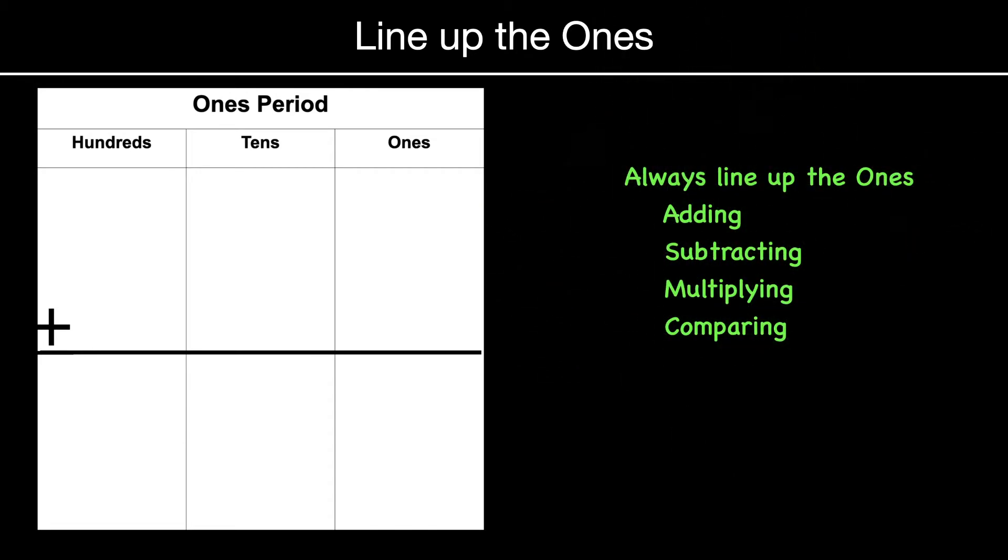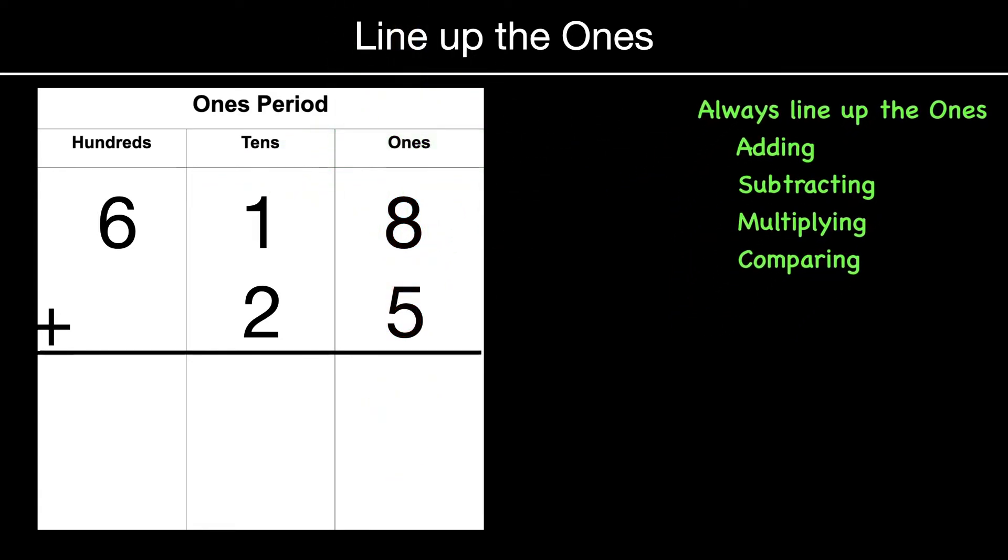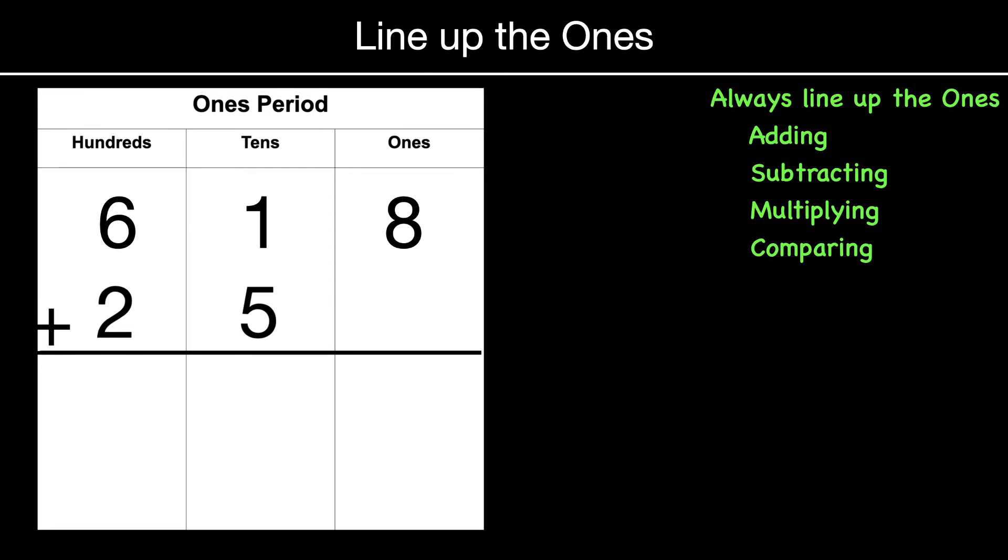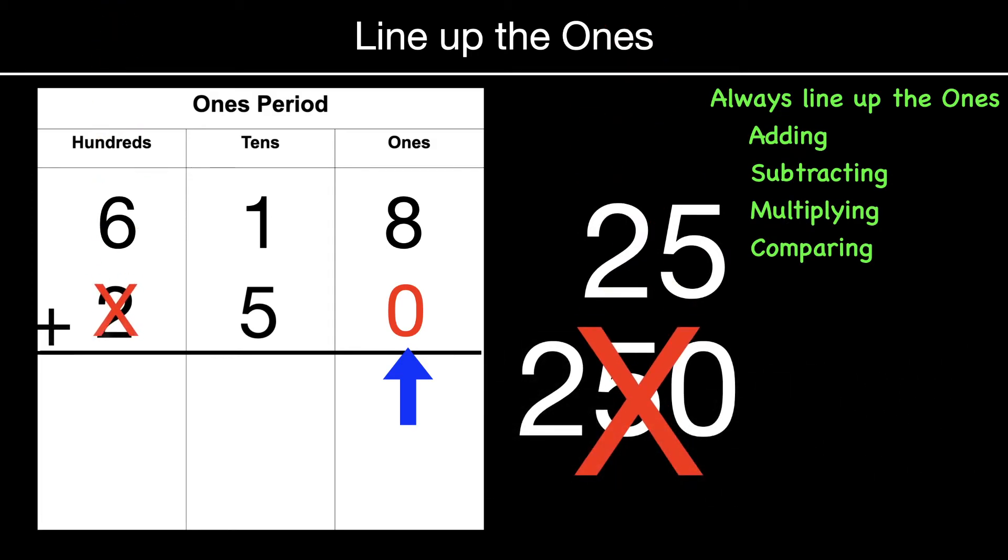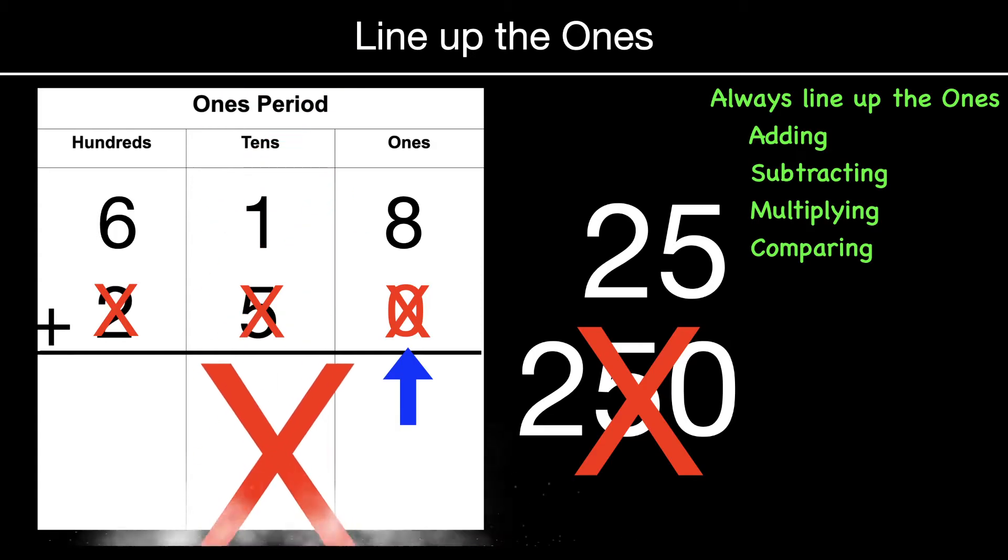Make sure that you line up the ones. That's probably one of the most important things I want you to remember today when you're adding and subtracting, multiplying, or comparing numbers. For example, 618 plus 25, make sure that the ones is lined up. Now you say, what do you mean by the ones? Well, the eight and the five for both of those numbers are in the ones place value, and they have to be lined up. If you accidentally slid that over, you would actually make the number 250 instead of 25, and so that would be wrong, and when you would add your columns, all of them would be incorrect.